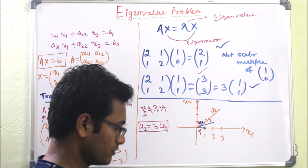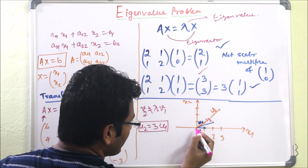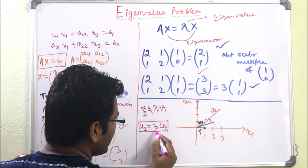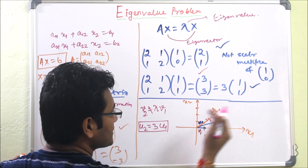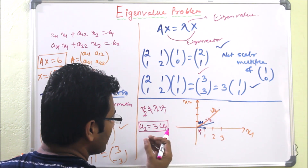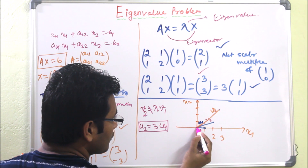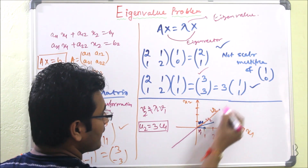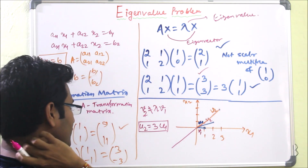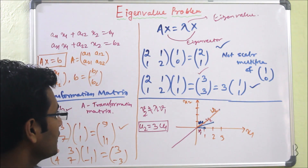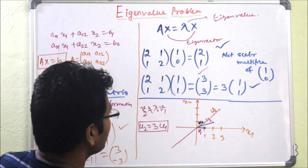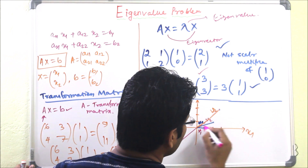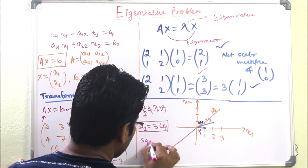This means the direction of the eigenvector stays the same but the length changes. If the eigenvalue λ is positive, the vector expands; if λ is negative, it contracts. The resulting vector will always lie on the same line as the original eigenvector.